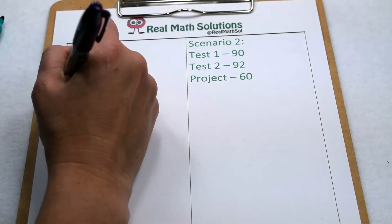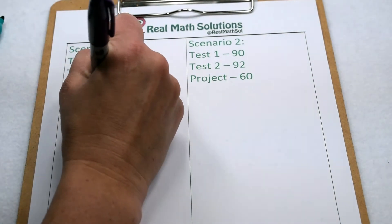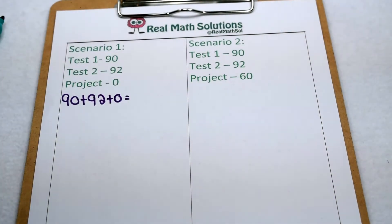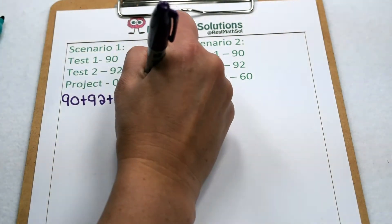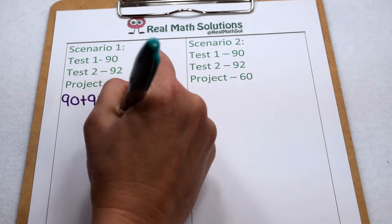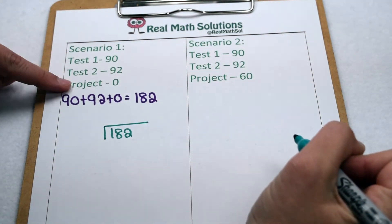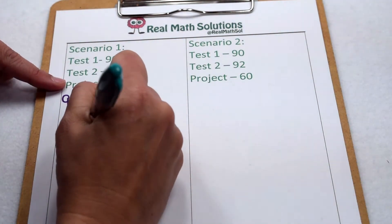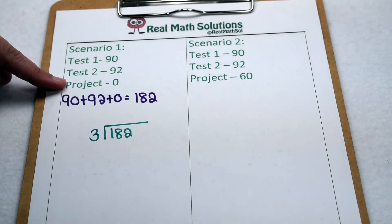Well, in our first scenario, to find our average, we would add 90 plus 92 plus 0. So that would mean we have a total of 182. So when we go to find your average, we would have 182, but it would still be divided by 3. Even though there isn't a grade for that project, that's still one of our data points, that 0.